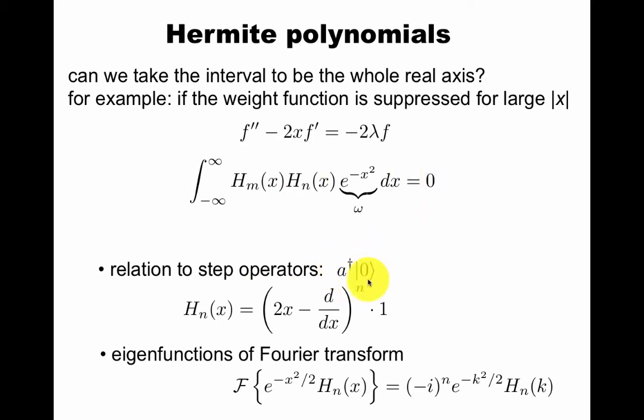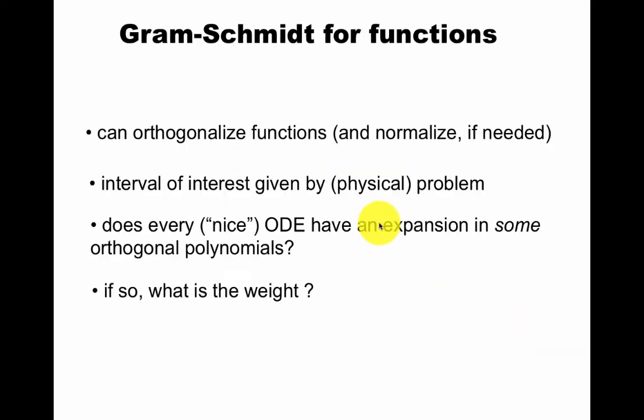There's a relation between step operators in quantum mechanics and basic quantum mechanics and this. And these are also eigenfunctions of the Fourier transform. There are many reasons to be interested in Hermite polynomials. They're relevant in quantum mechanics, Fourier transformations. But they have this funny weight function that I call omega here.